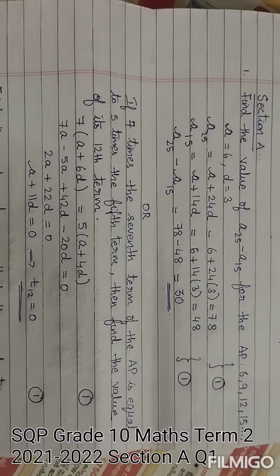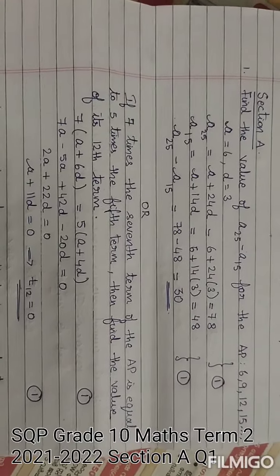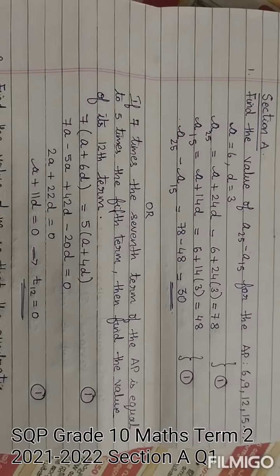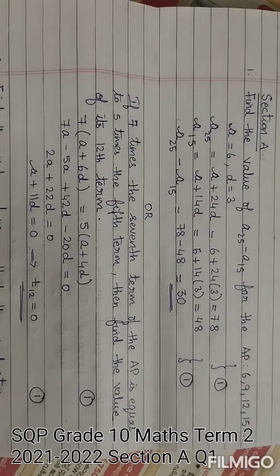Substitute the values. So we will get A25 as 78 and A15 as 48. So A25 minus A15 equals 30.